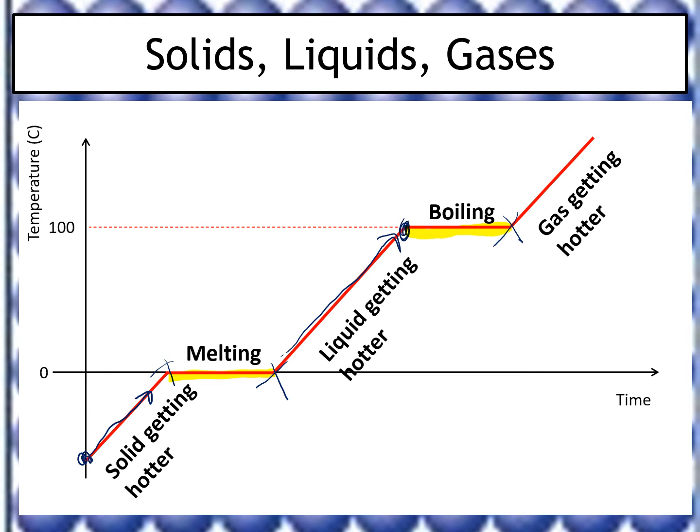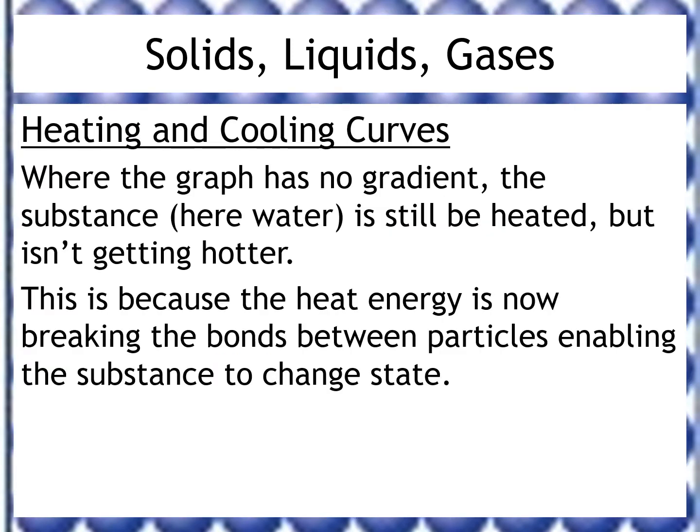Theoretically, if I keep heating, the gas will continue to get hotter. To summarize: where the graph has no gradient, the substance is still being heated but isn't getting any hotter — because the heat energy is breaking bonds, enabling the substance to change state. So wherever the graph is flat, we're either looking at melting or boiling.